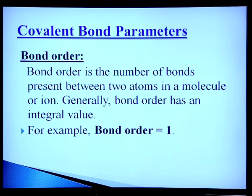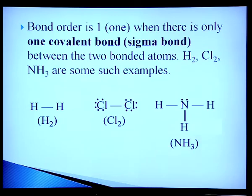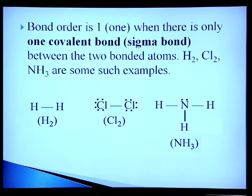Covalent parameters: The bond order is the number of bonds present between two atoms in a molecule or ion. Generally, bond order has an integer value. Bond order of 1 means there is only one covalent bond (sigma bond) — examples include H₂, Cl₂, and NH₃. Bond order 2 applies to O₂ or ethene. Bond order 3 applies to acetylene or N₂.